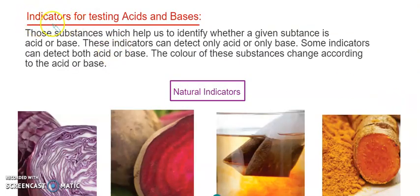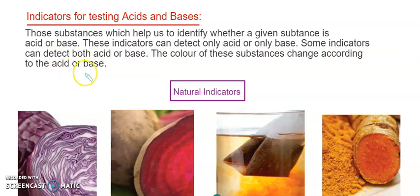Indicators are used for this. The different types of indicators help us find out whether a solution or liquid is an acid or a base. Those substances which help identify whether a given substance is acid or base — these indicators can detect acid or base by changing the color of the solution. Some indicators can detect both acids and bases.